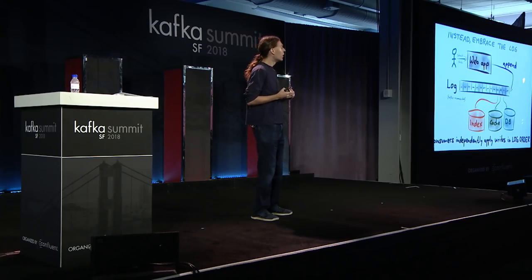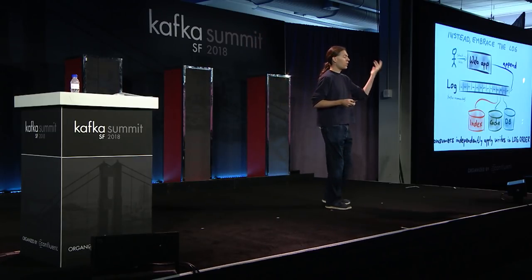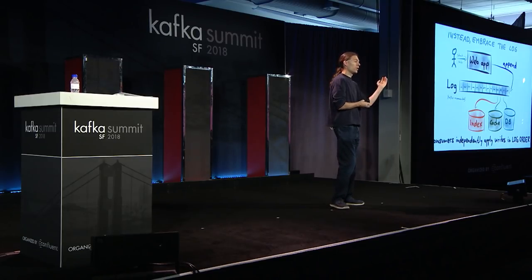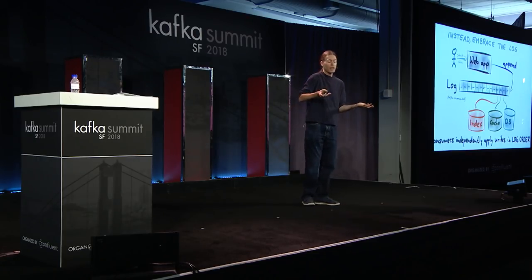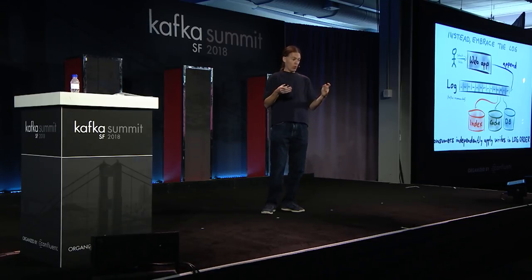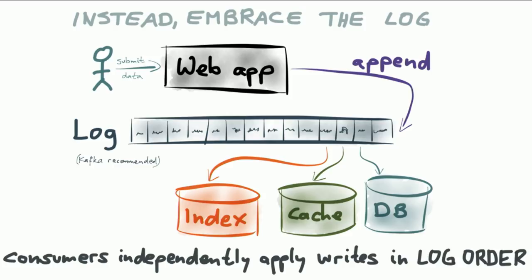We can rely on this guarantee to ensure that any event appearing in the log will eventually be reflected in the database, the cache, and the search index. And if the search index is temporarily running slow, that's all right — the database and cache can still continue consuming the log without interference. When the search index recovers, it can restart consumption from its last checkpoint, go through the backlog, and apply all of the messages. So what we get here is atomicity — exactly the all-or-nothing guarantee — without any distributed transactions.